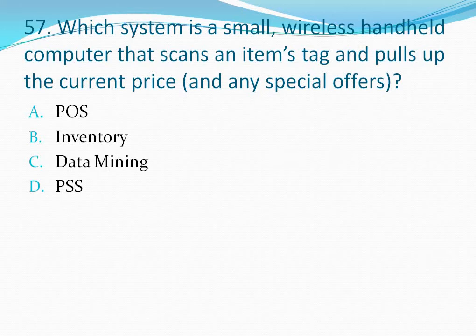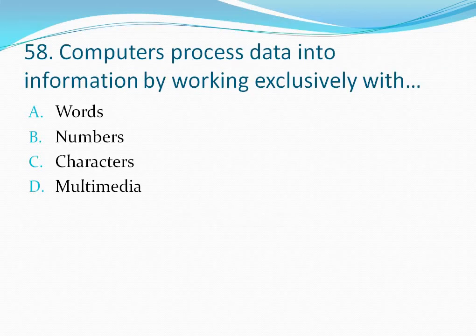Question number 57: Which system is a small wireless handheld computer that scans an item's tag and pulls up the current price and any special offers? Your options are: option A POS, option B inventory, option C data mining, option D PSS. The correct answer is option A — POS (Point of Sale) machines.